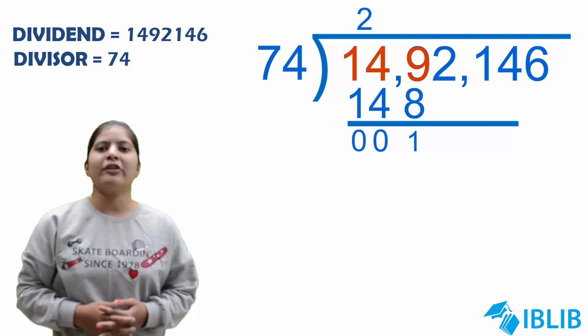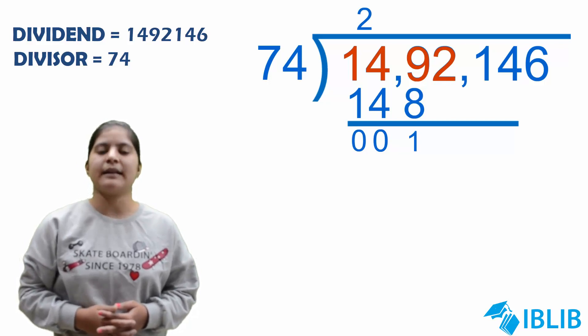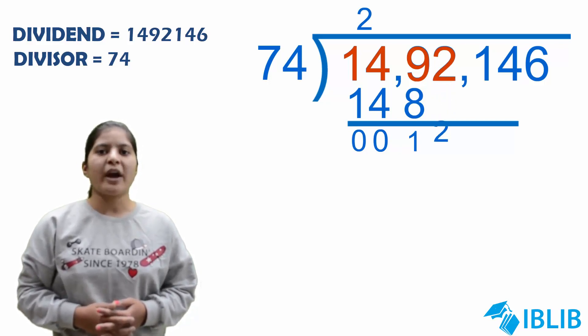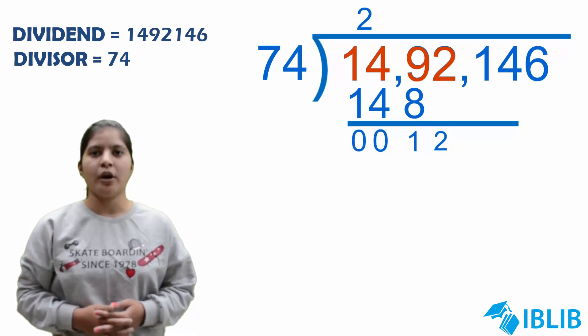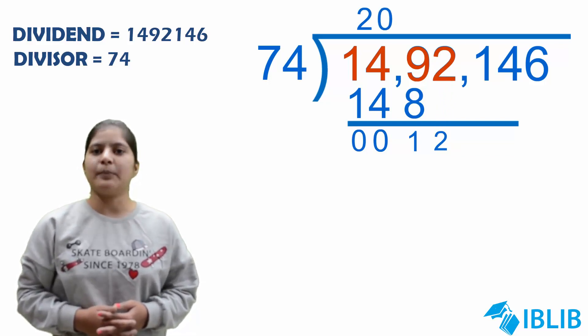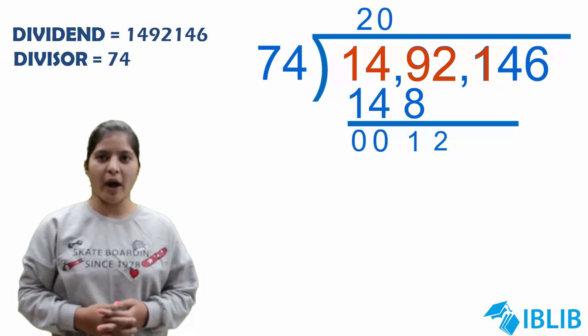Now, we will bring down the next digit that is 2. Now, we are having 12. As 12 is less than 74, we will put 0 at the place of quotient and bring down the next digit that is 1.